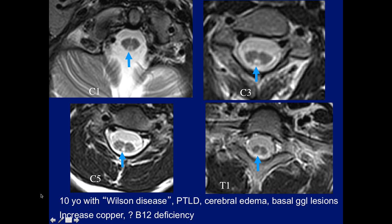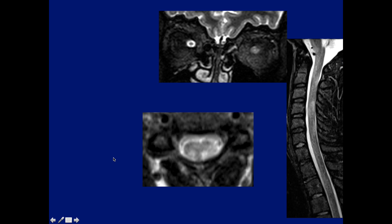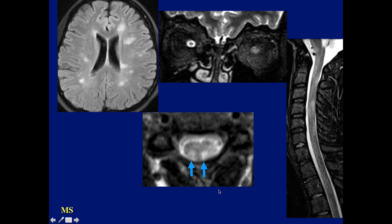Here's a patient that Ajay and I looked at — a 10-year-old with questionable Wilson disease, liver failure, transplant, cerebral edema, basal ganglia lesion, questioned increased copper and B12 deficiency — and again we see abnormal signal in the fasciculus gracilis and possibly also in the cuneate. Here we also have a patient with cord lesions and typical abnormalities involving the optic nerve with abnormal signal in both fasciculi gracilis — a case of MS, which can also involve the posterior columns.